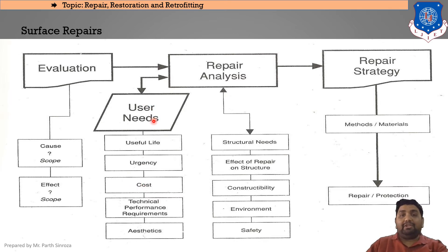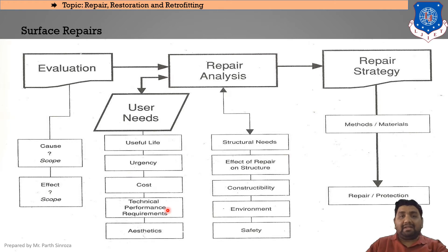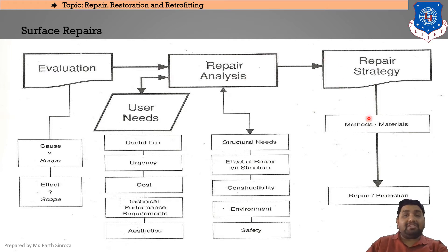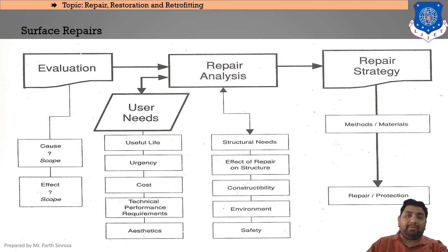User needs also include technical performance requirements — if the purpose of the structure is fulfilled, we can prolong the effects — and aesthetics. For structural needs, we consider the effect of repair on structural design, constructability, environment, and safety. The repair strategy determines what methods and materials will be used and how the repair will be protected long-term.